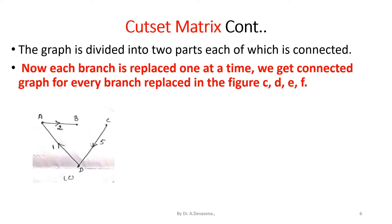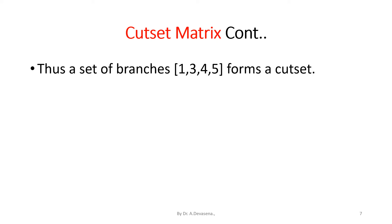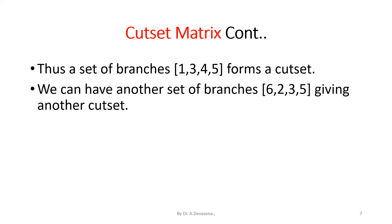In figure C, branch 4 is replaced. In figure D, branches 1 and 4 are replaced. In figure E, branches 1 and 3 are replaced. In figure F, branches 4, 1, and 3 are replaced. Thus, a set of branches 1, 3, 4, and 5 forms a cut set. We can have another set of branches 6, 2, 3, and 5 giving another cut set.